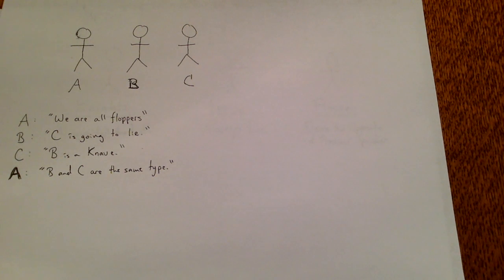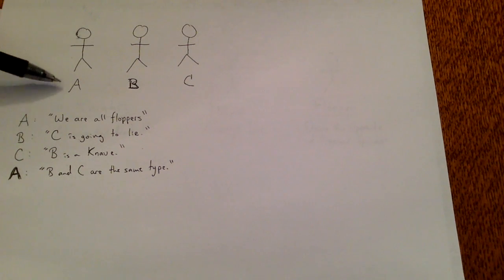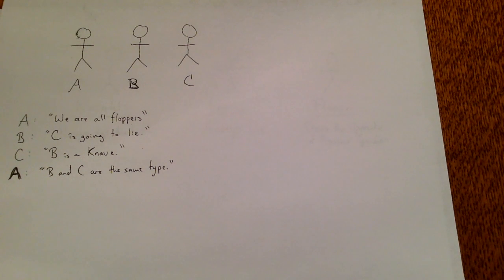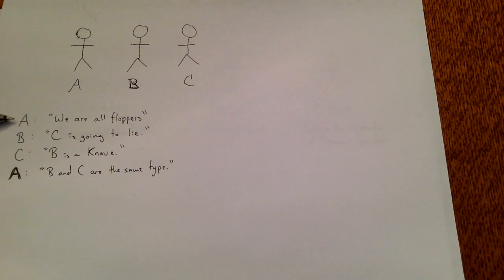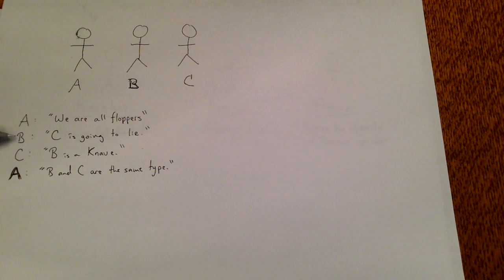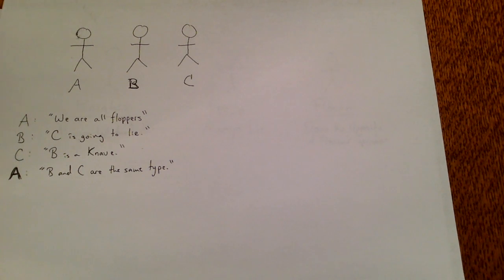We want to evaluate from these statements what they are. We could follow the truth table method, but since there are three possibilities for each speaker and three speakers, there are 27 possibilities. Instead, let's use case analysis to reduce the cases to consider. As an example, if A says "we are all floppers" and that's true, then C's statement that B is a knave is false, and therefore B's statement that C is going to lie is true. However, if A told the truth and B also told the truth, then B was not a flopper.